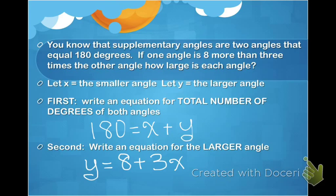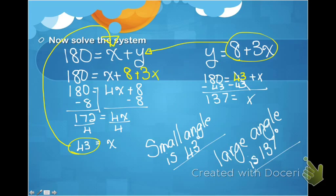And one of the equations has already been solved for y, so I don't have to do that. And I substituted my y equals eight plus three x into my original equation, solved for my smaller angle, which was 43 degrees.